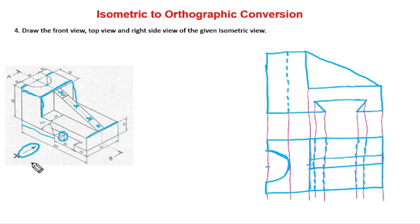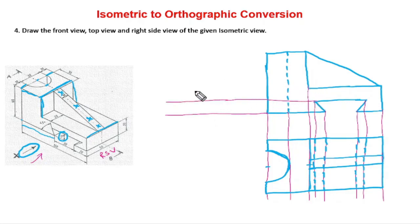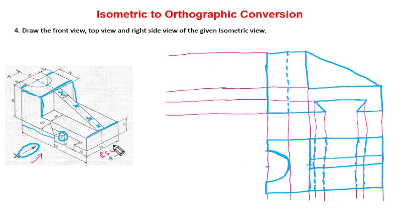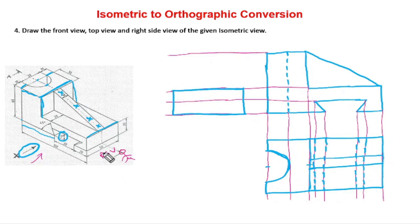Now coming to the side view — which is the right side view. Once again, from the front view direction, this becomes our right side view. For drawing the right side view, I am going to draw projection lines from the front view — here, here, and here. After drawing the projection lines, that is the first thing I am able to see in the side view.